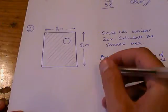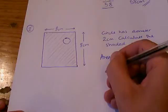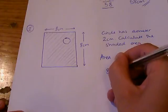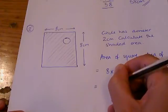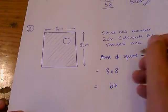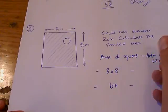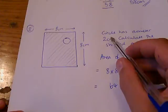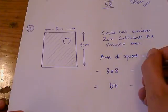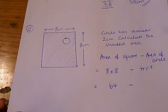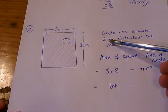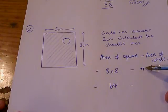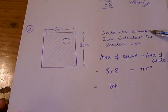The area of the square is 8 by 8, which is 64. And the area of the circle is πr². Now in this case, you were told the diameter of the circle, which is 2. The area of the circle needs the radius, but you were given the diameter.